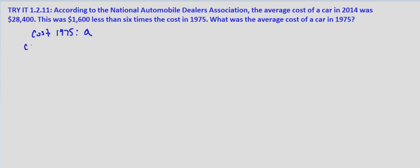So the cost in 2014 compared to 1975, it's $1,600 less than six times the cost in 1975. So six times the cost in 1975 is 6A minus $1,600. And we're also told that the average cost in 2014 was $28,400. So six times the cost in 1975 minus $1,600 is $28,400.